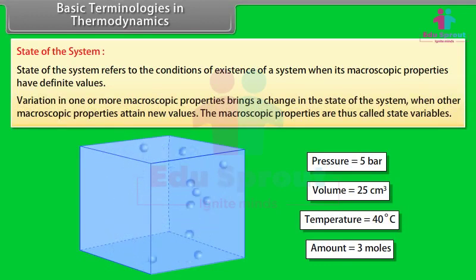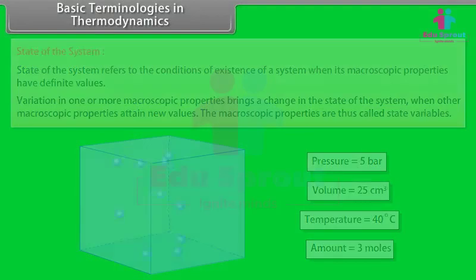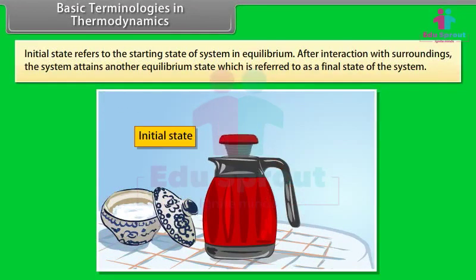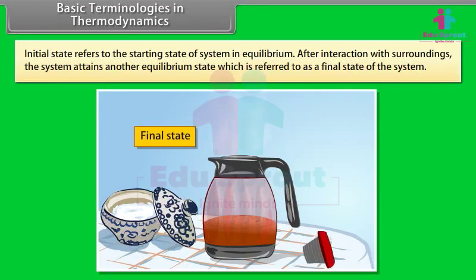Variation in one or more macroscopic properties brings a change in the state of the system. When other macroscopic properties attain new values, the macroscopic properties are called state variables. The initial state refers to the starting state of the system in equilibrium. After interaction with surroundings, the system attains another equilibrium state, referred to as the final state of the system.